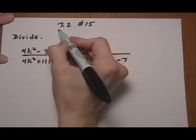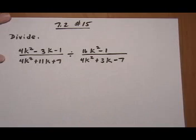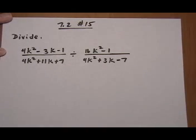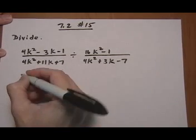7.2, number 15. Divide the rational expressions. So, as usual with division, we're first going to turn it to multiplication.